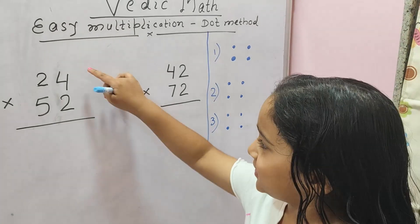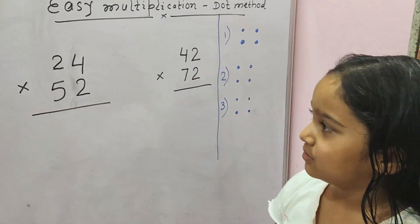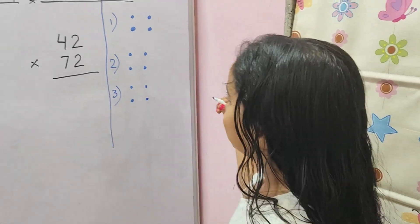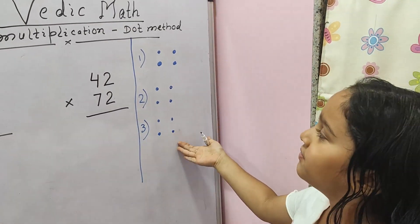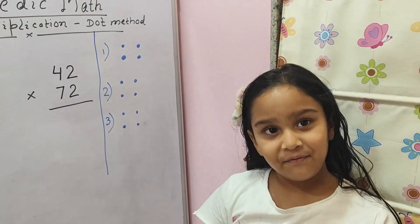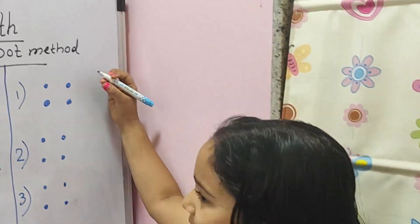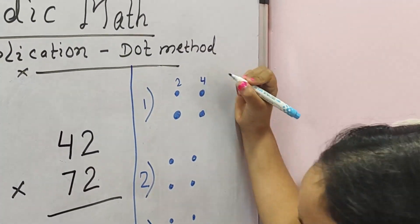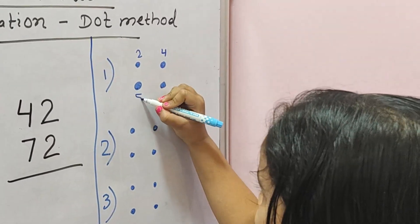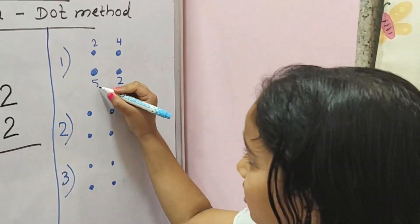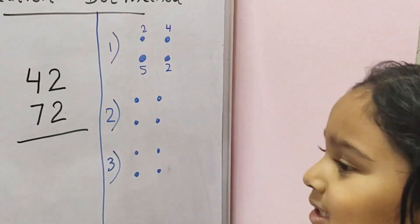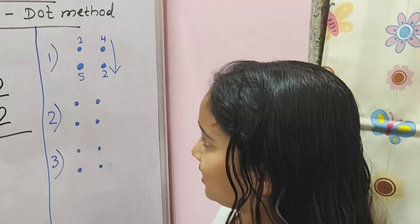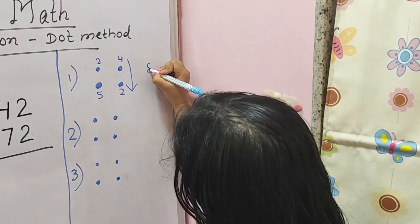So first we have 24 multiplied by 52. So how do we do it? First we have these dots for 24 and 52. The number 2 will come in this dot, 4 will come in this dot, 5 will come in this dot, and 2 will come in this dot. So the first step is we will multiply these — 4 times 2, which is 8. We write 8.